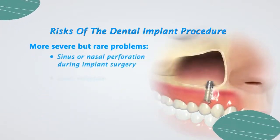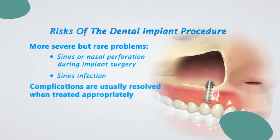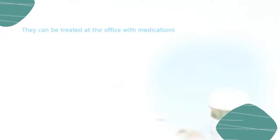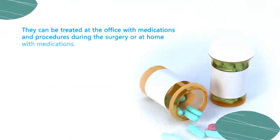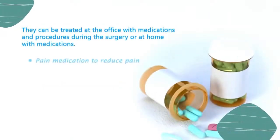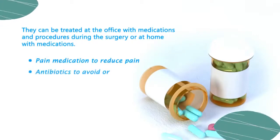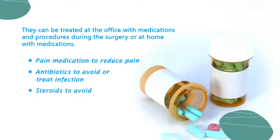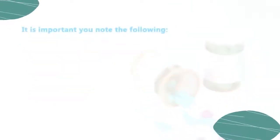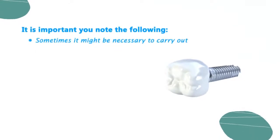This numbness is usually temporary but occasionally it may be permanent. In the upper jaw, sinus or nasal perforation during implant surgery can lead to sinus infection. Complications are usually resolved when treated appropriately. They can be treated at the office with medications and procedures during the surgery, or at home with medications such as pain medication to reduce pain, antibiotics to avoid or treat infection, and steroids to avoid inflammation.